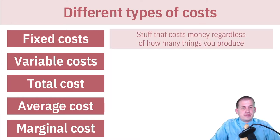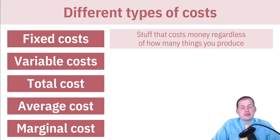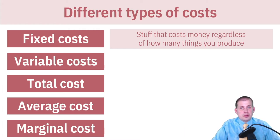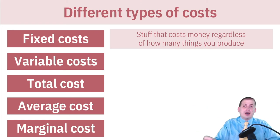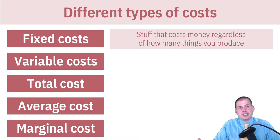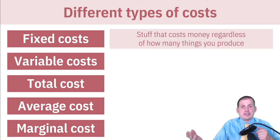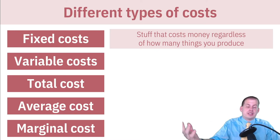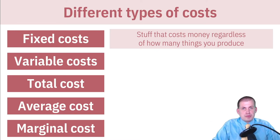There are different types of costs. There are things called fixed costs, which cost money regardless of how many things you produce. If you have a factory and you can make one spoon or ten billion spoons, it all happens in the same factory. You have to pay rent on that factory, you have to pay utilities — those are fixed costs, things you have to pay all the time regardless of how many spoons or whatever product you're making.